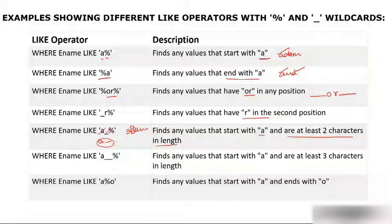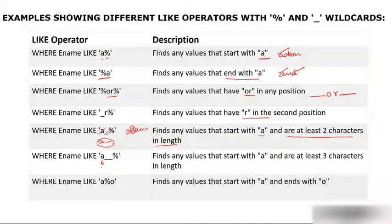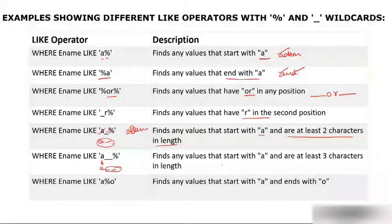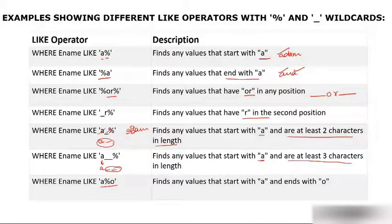'a__' means the first character is 'a' and there must be exactly two more characters after it — any two characters but at least two — so the name must be at least three characters long. 'a%o' means the name starts with 'a' and ends with 'o'.